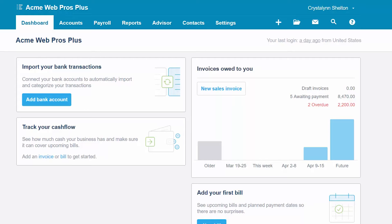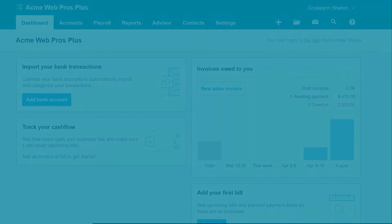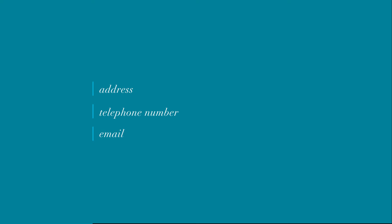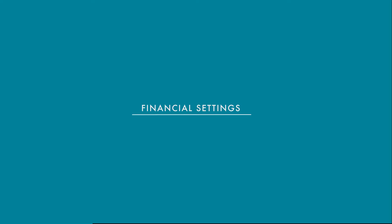The information required to set up the organization and financial settings section affects just about everything that you do in Xero. In the organization section, you will provide basic information such as the address, telephone number, and email address of your business. This information will appear on customer invoices, credit notes, and purchase orders that you create.